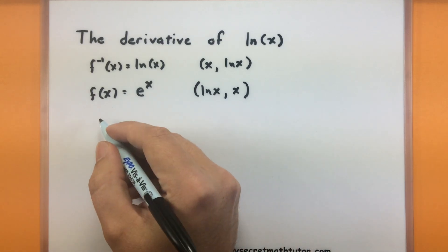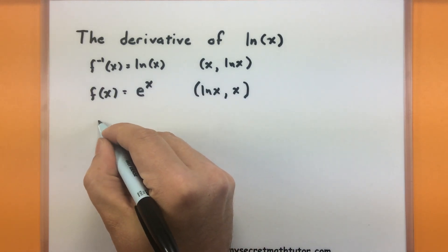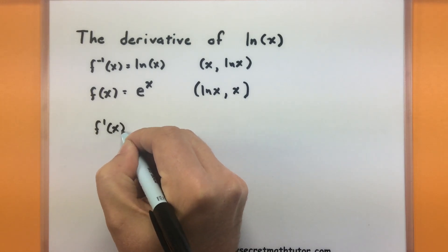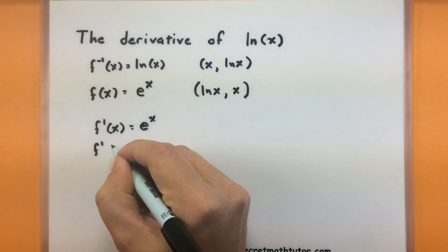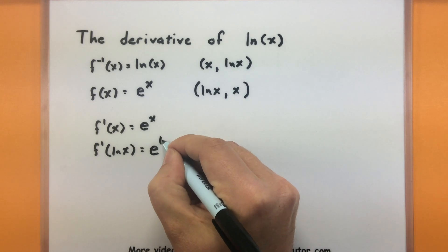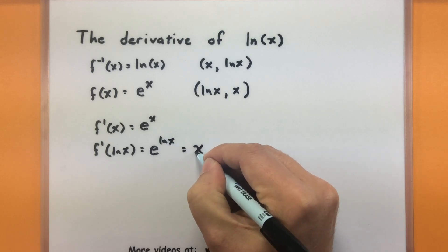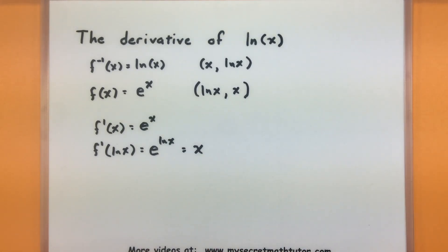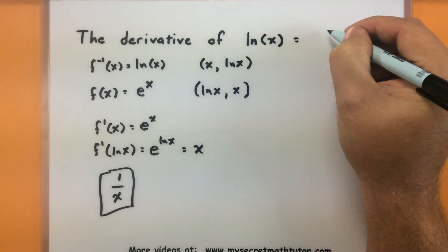Now I have the corresponding points and the original function. I need to find the derivative of e to the x evaluated at this new flipped-around point, then take its reciprocal. The derivative of e to the x is simply e to the x. Evaluating at natural log of x: e to the natural log of x — the e and natural log cancel, leaving just x. That's almost the derivative; one last step is to take its reciprocal, which gives 1 over x. So this gives us the formula for the derivative of natural log: it's simply 1 over x, for positive x values.